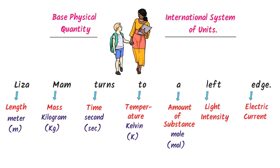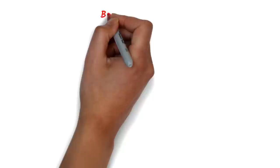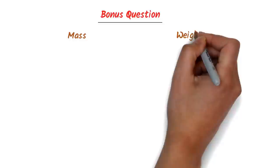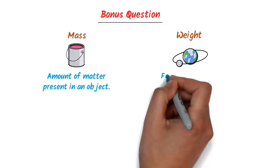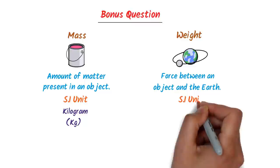Remember that except these seven units, the rest are called derived units. As a bonus: what is the difference between mass and weight? Mass is the amount of matter present in any object, while weight is the force between the earth and an object. The SI unit of mass is kg and the SI unit of weight is Newton.